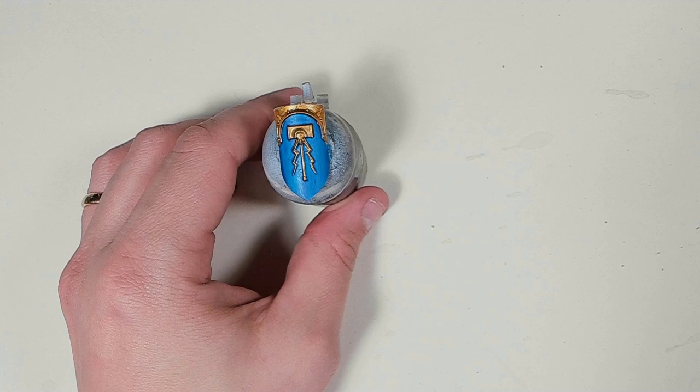This is Retributor Armor. We're just painting that simply on and after we've painted that on, watching not to go into the blue because fixing up contrast paints can be a hassle. We are adding the Guilliman Flesh contrast paint over top of the gold bit so it will have a little bit more depth to it.